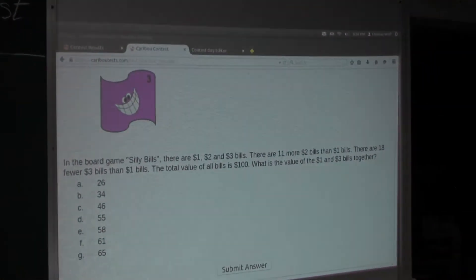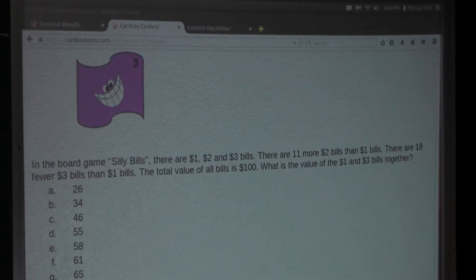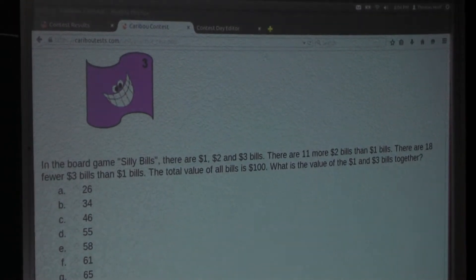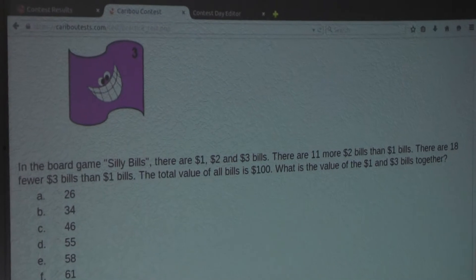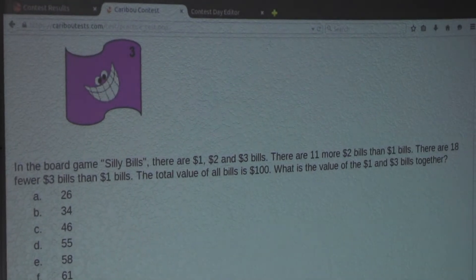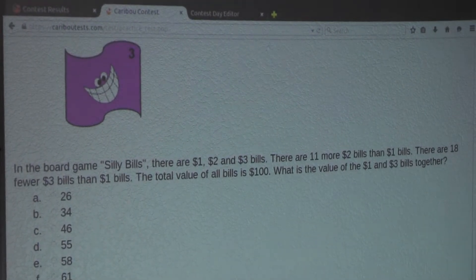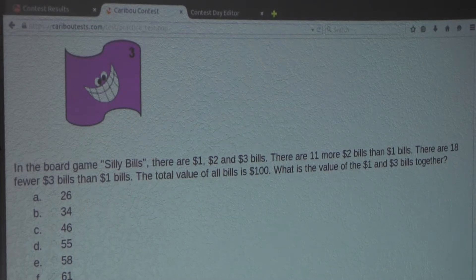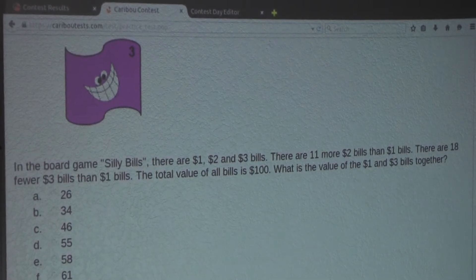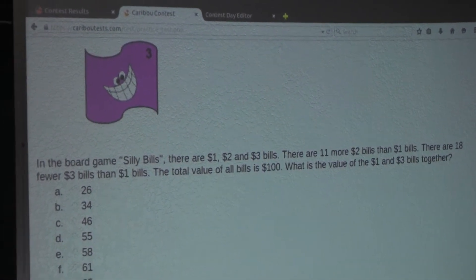The question is: in the board game Silly Bills, there are $1, $2, and $3 bills. There are 11 more $2 bills than $1 bills. There are 18 fewer $3 bills than $1 bills. The total value of all bills is $100. What is the value of the $1 and $3 bills together?